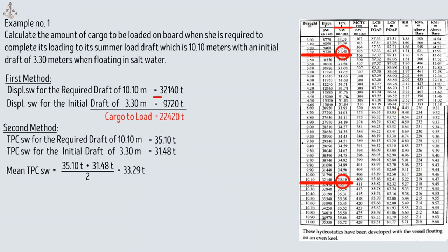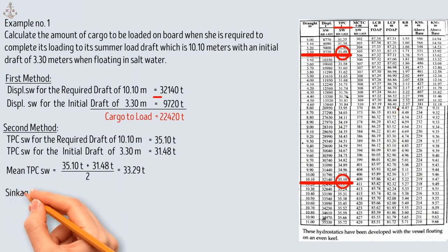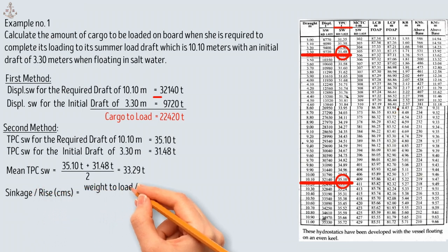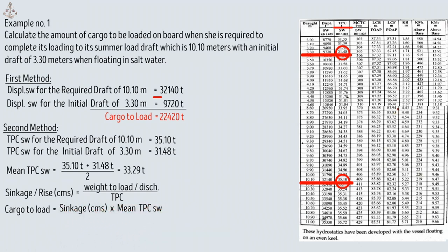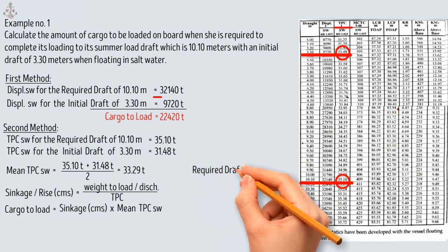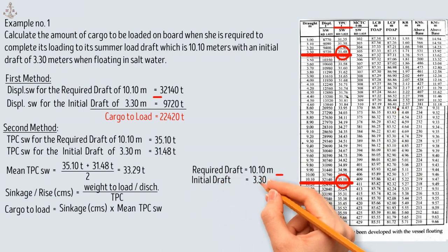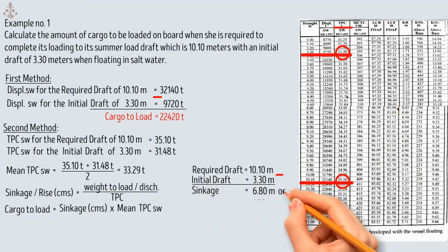To determine the cargo to be loaded to achieve the required draft, we use the formula: sinkage or rise in centimeters equals weight to load or discharge divided by TPC. We use sinkage when loading and rise when discharging. So cargo to load equals sinkage in centimeters times mean TPC. The sinkage is the required draft of 10.10 meters minus the initial draft of 3.30 meters, which equals 6.80 meters, or 680 centimeters.